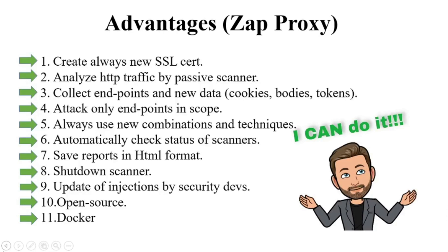ZAP always uses new combinations and techniques, which is very important, because it can replace any parameter in JSON body, header, or URL and try to hack it. ZAP API helps to check the status of the scanner, which is very important because you can run many different types of scanners for different endpoints. When you automate it, your automation test should know when it is possible to activate the next step.